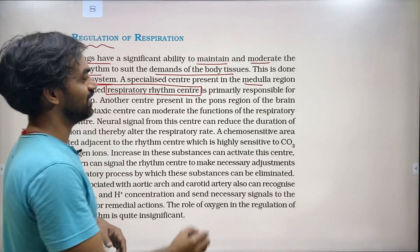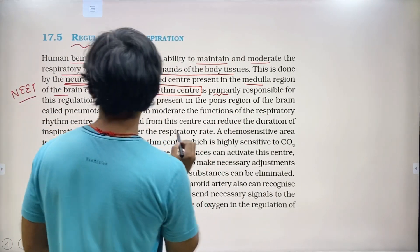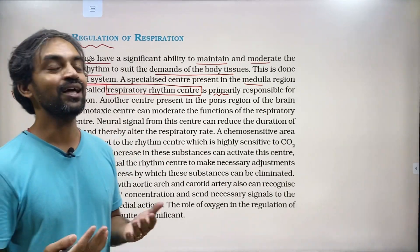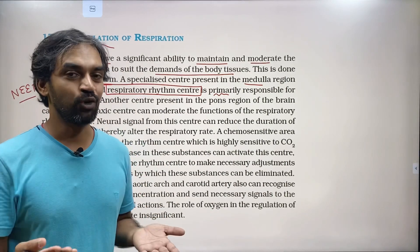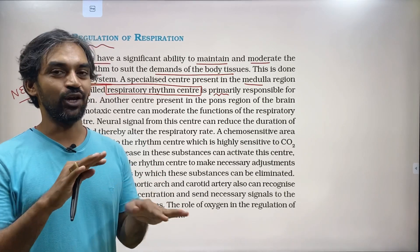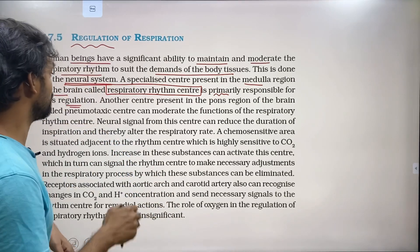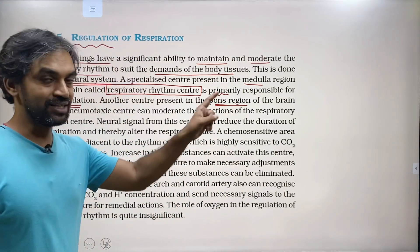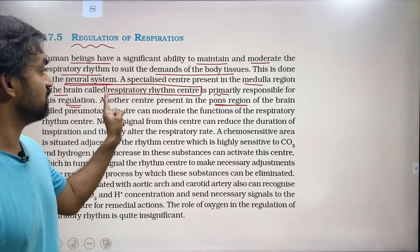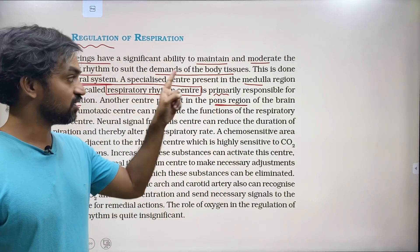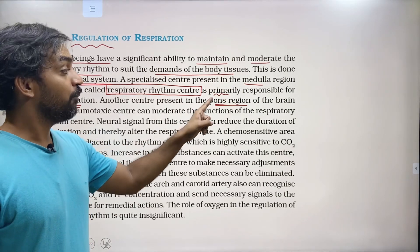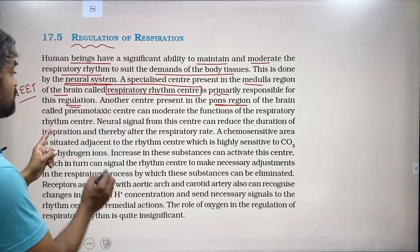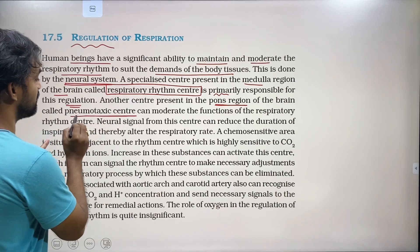The pons region is primarily responsible for modulating this regulation — regulation meaning you can increase or decrease respiratory rate. Another center is present in the pons region of the brain called the pneumotaxic center, while the medulla region contains the respiratory rhythm center.